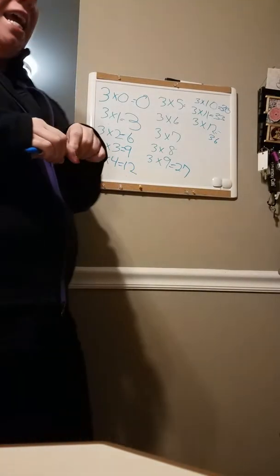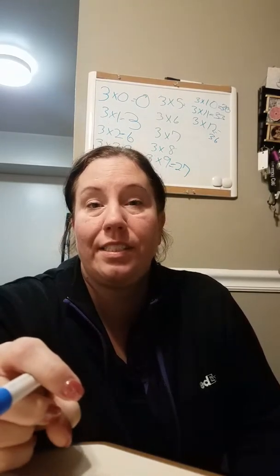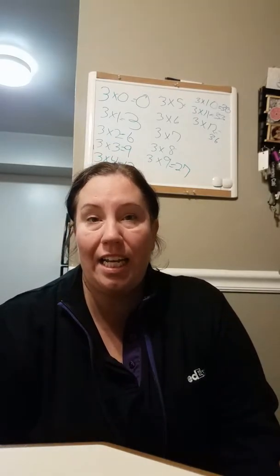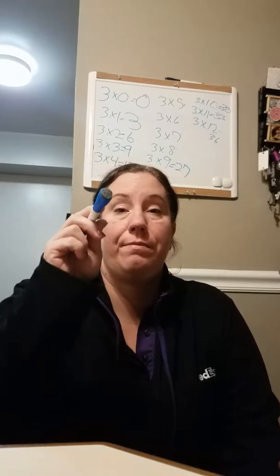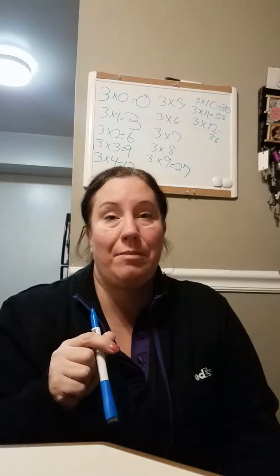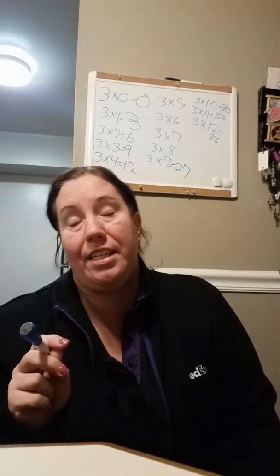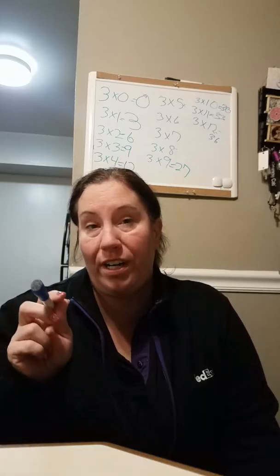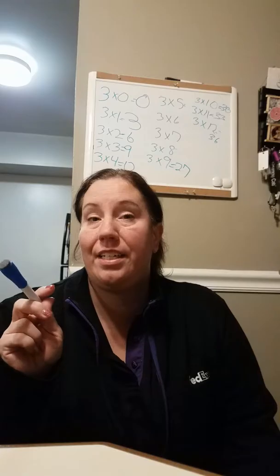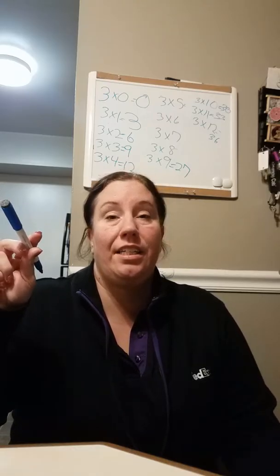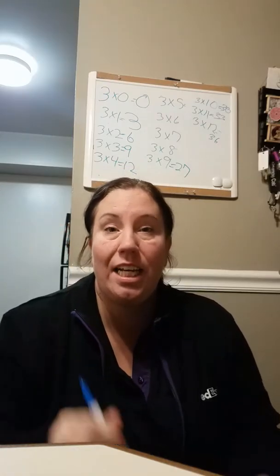Let's start it again. What is three times zero? Zero. Three times one is three. Three times two? Six. Three times three is nine. Three times four? Twelve. Three times five? Fifteen. Three times six? Eighteen. Three times seven is twenty-one. Three times eight? Twenty-four. Three times nine? Twenty-seven. Three times ten? Thirty. Three times eleven? Thirty-three. And three times twelve is thirty-six.